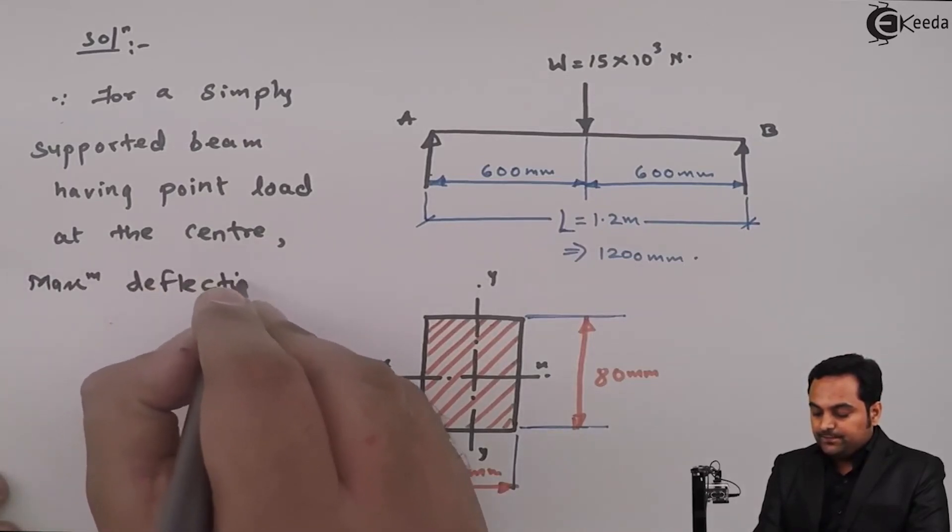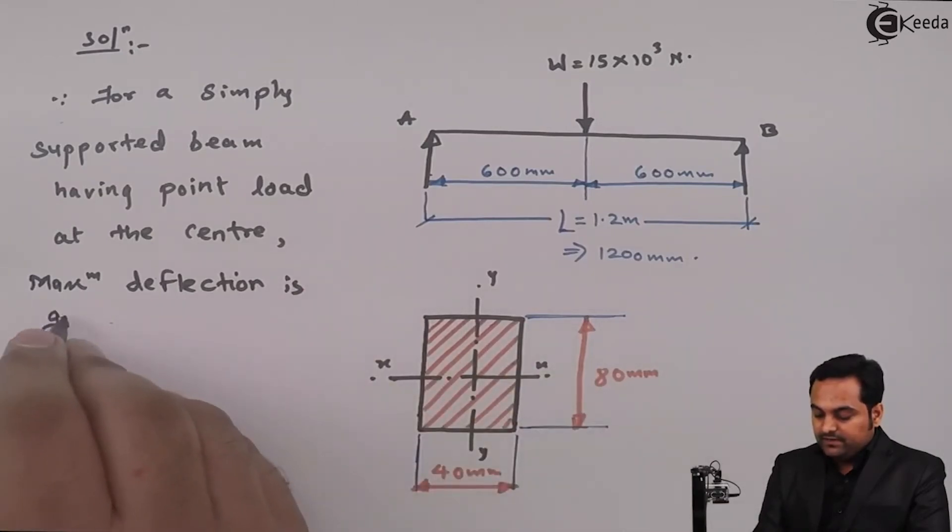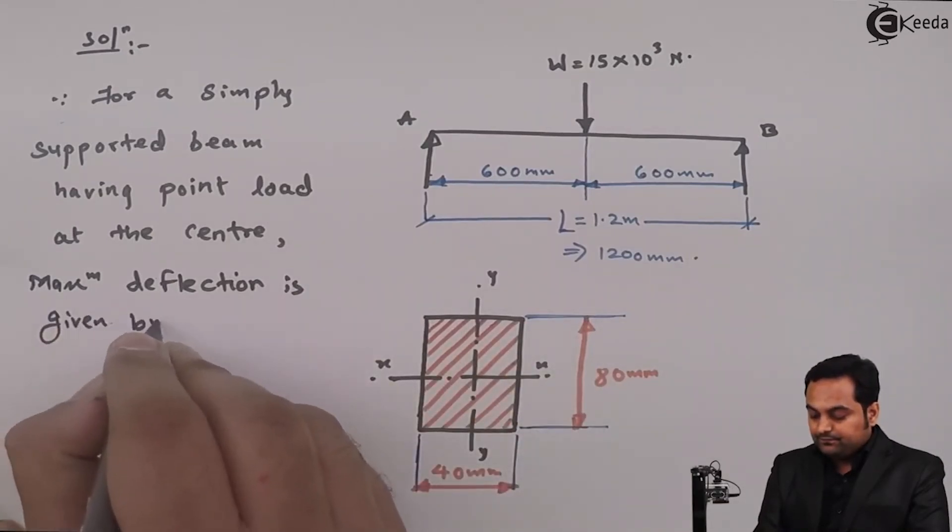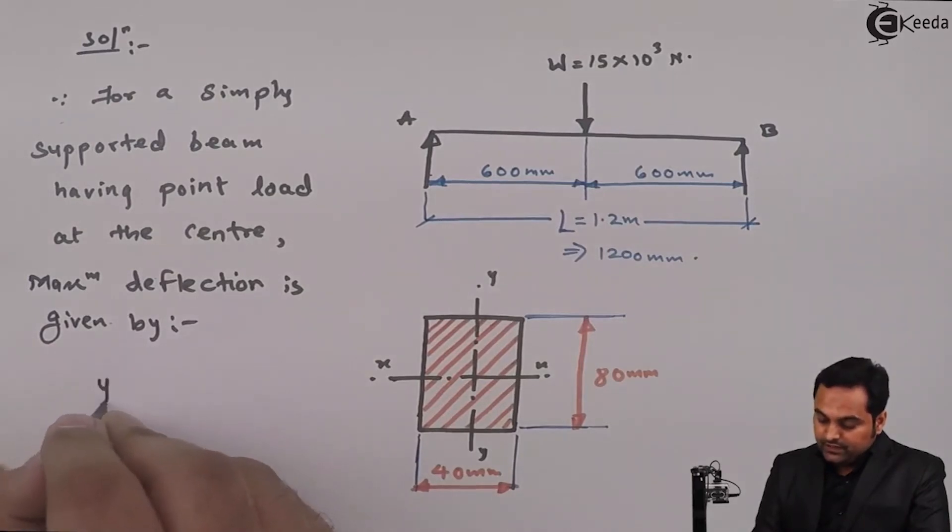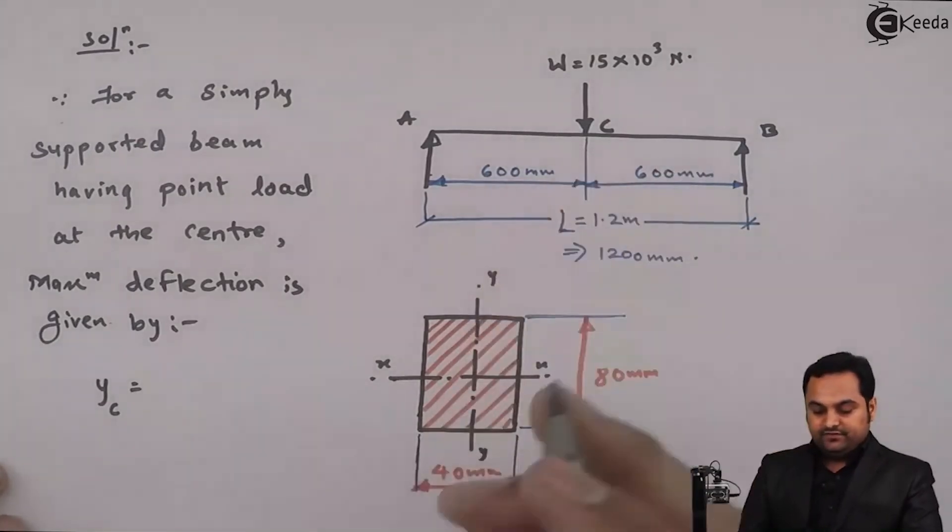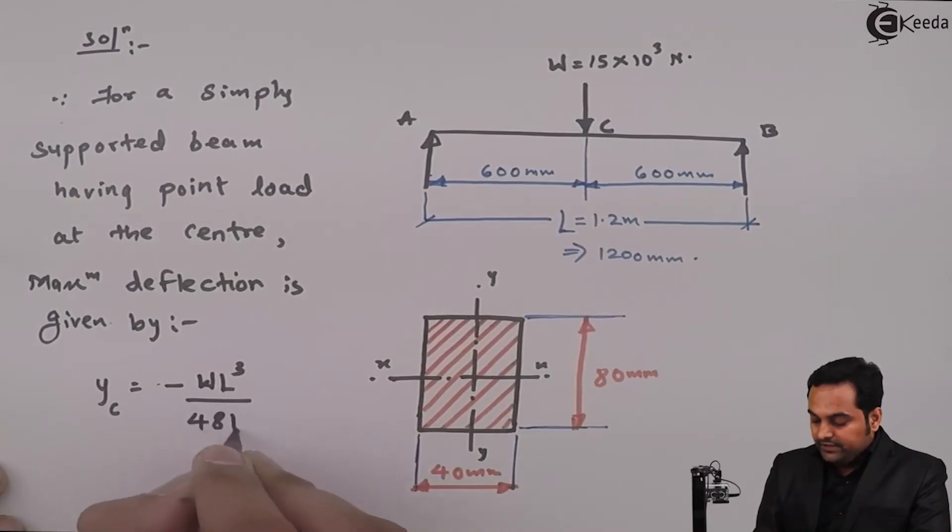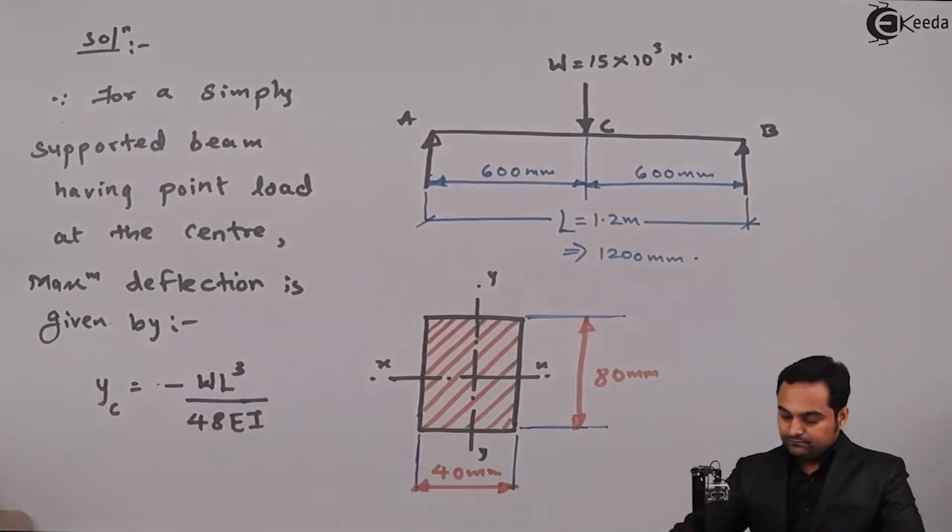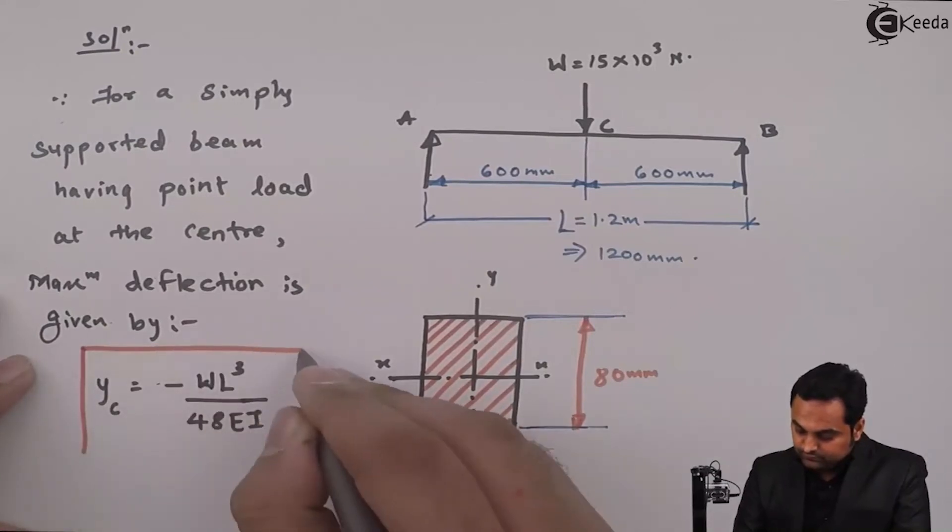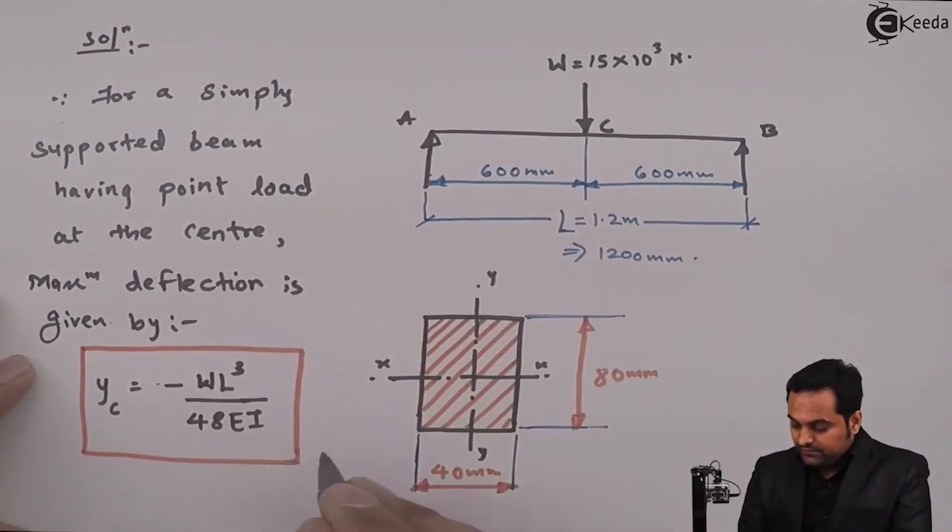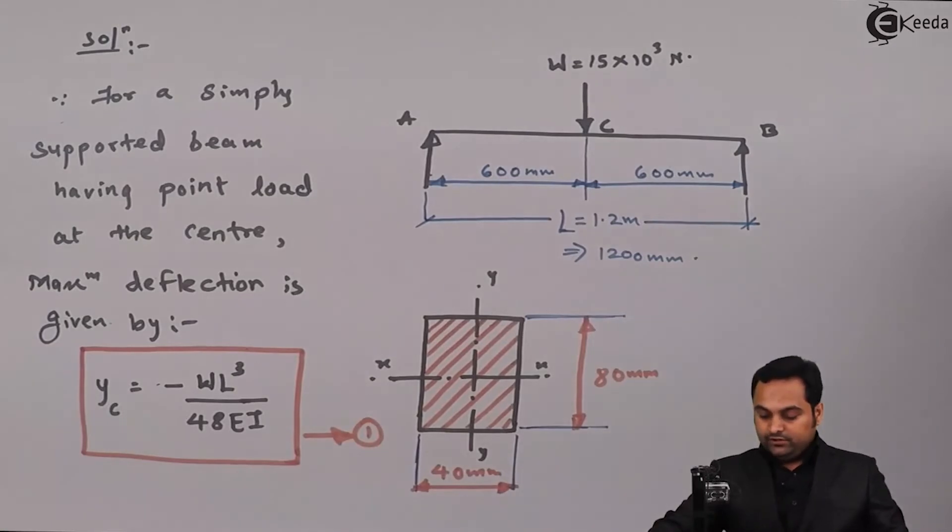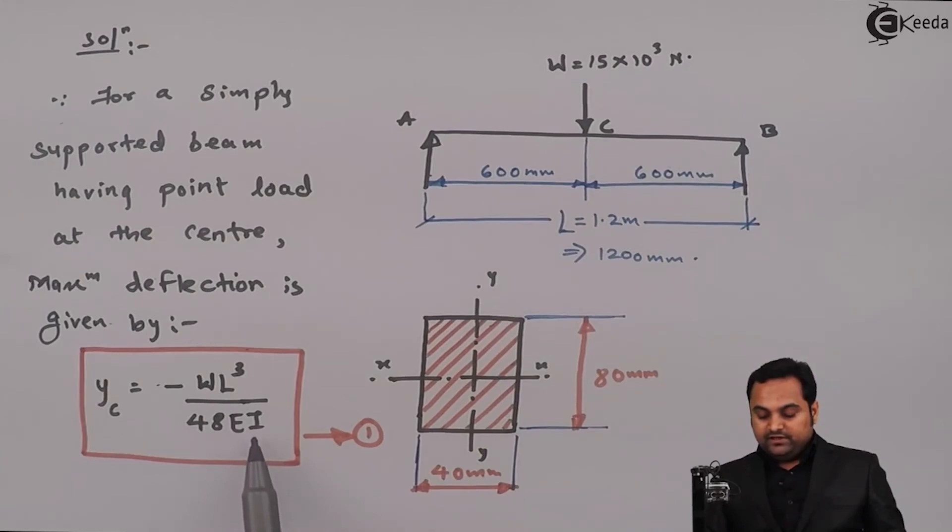Maximum deflection is given by the formula. I'll call this point as y_c, so y suffix c, that is the deflection here, minus WL cube upon 48EI. Keeping this as the first equation, now here we have W value, we have capital L, only unknown is the value of I. E is also given.